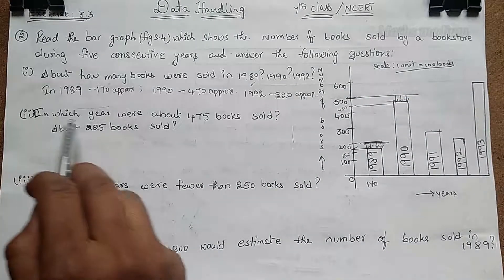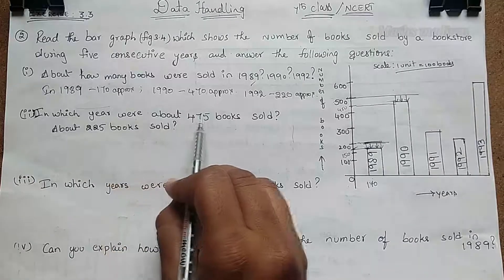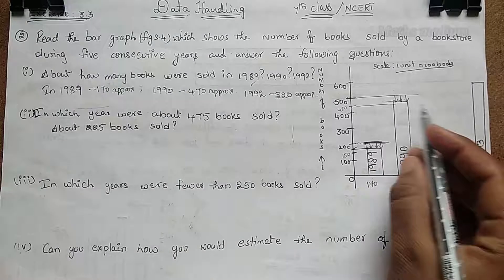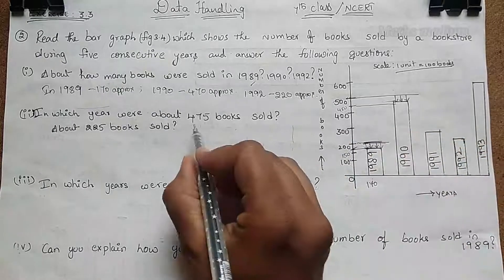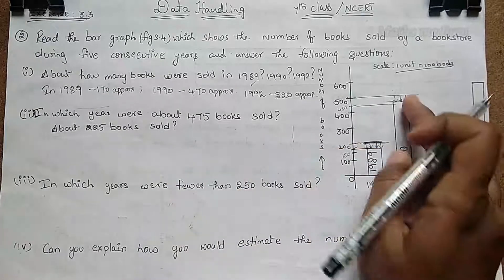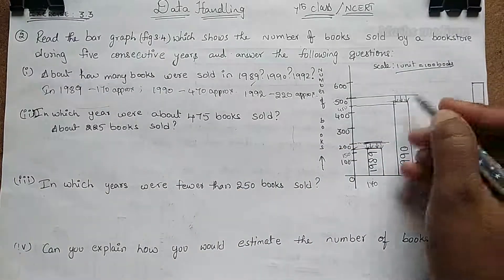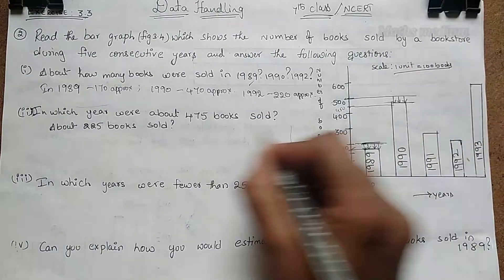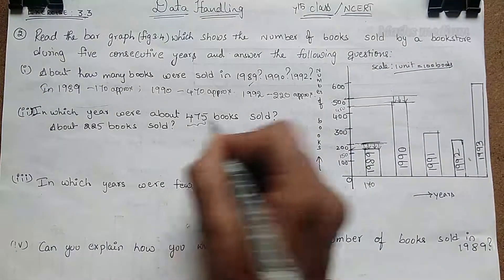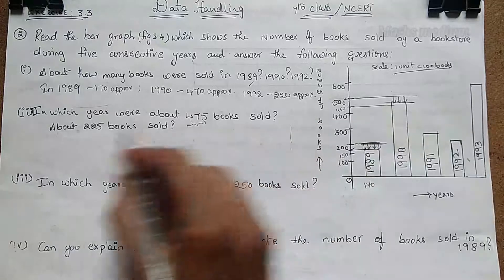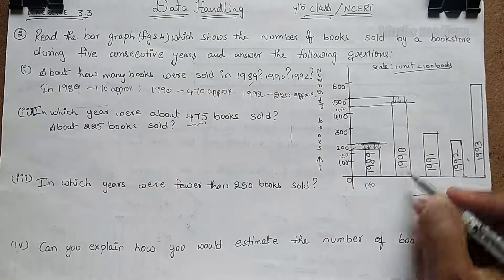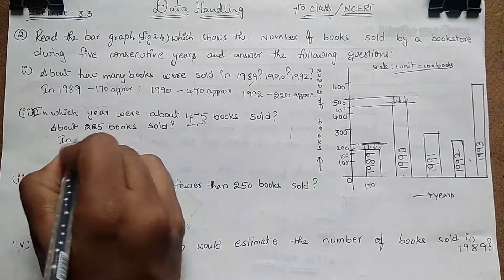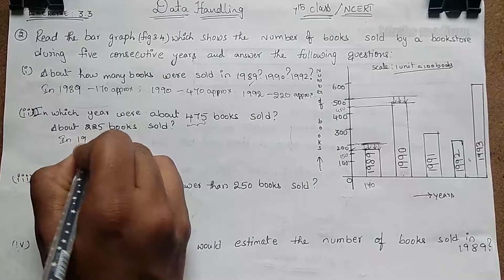Next, coming to the second question: in which year were about 475 books sold? In this bar graph we have to check where 475 falls — it is near the 500 line. Looking at the bars, 475 is closest to the 1990 bar. So the answer is 1990.